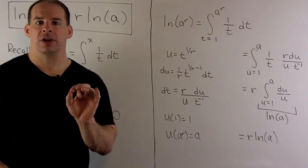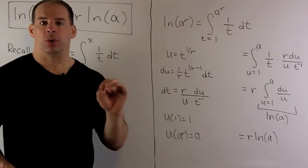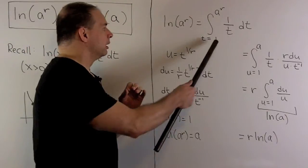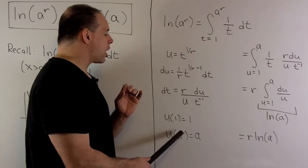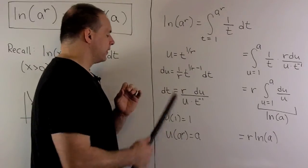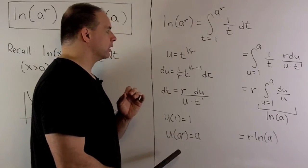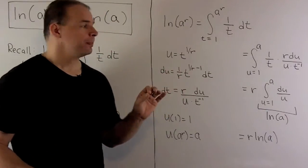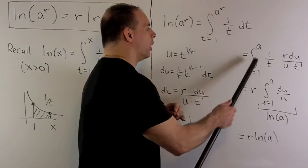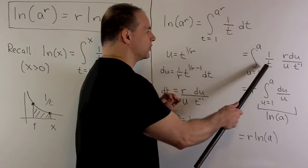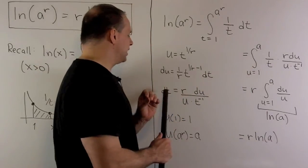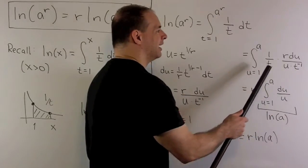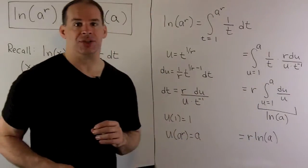I also want to change from the t variable to the u variable in the limits. So u of one is equal to one, and u of a to the r is equal to a — and that's what's motivating our substitution. Pushing everything over to u, we have u going from one to a. I leave the one over t alone, then dt becomes r du over u times t to the minus one, and the t and the t to the minus one cancel each other out.